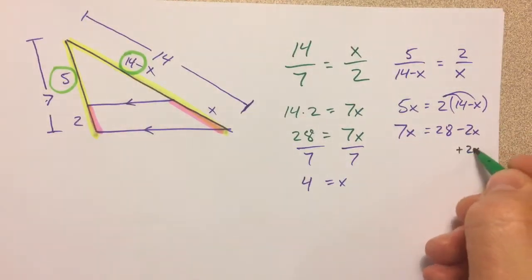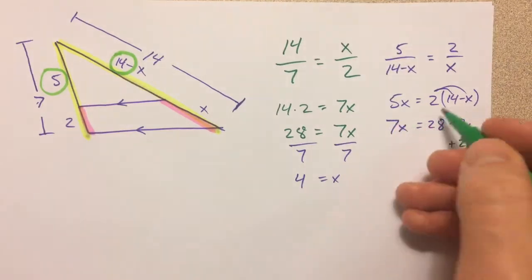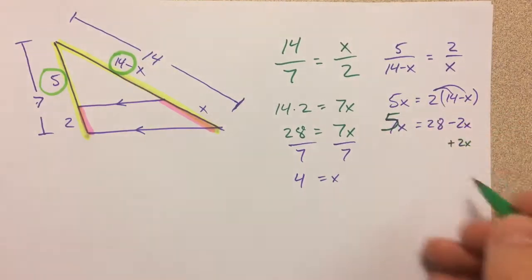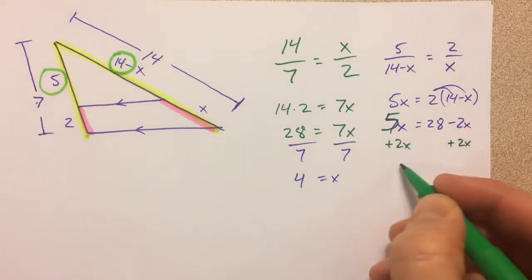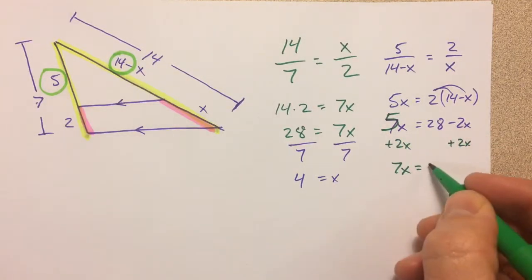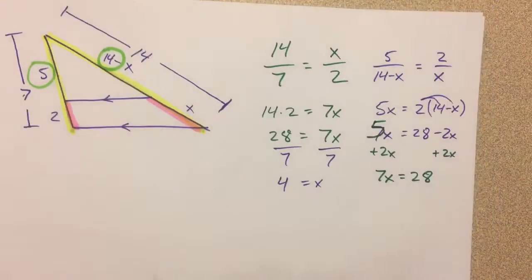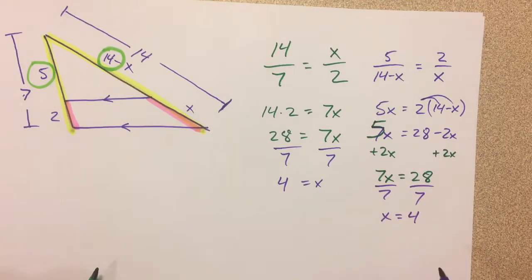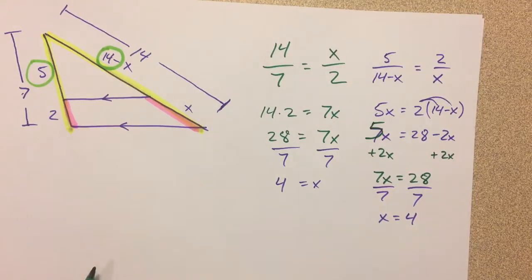And then we can add 2x to both sides, and we end up, sorry, this was a 5x because 5 stays a 5. Add 2x, I was getting excited, I was thinking about the 7x that was coming. And then we divide by the 7, and we're back to where we started from, or at least the same answer that we had with the first one.